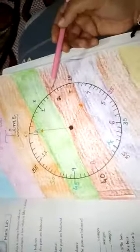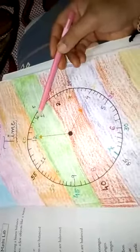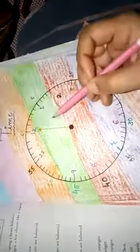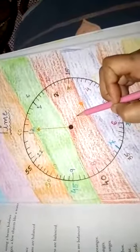So today we will start the chapter time. See, here I am having one clock. In clock we are having two hands. Big hand, small hand.